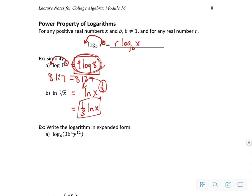So in this case, I recognize on part A that 36 to the x is multiplied times y to the 11th. There's a times in here. So I can use the product rule, or the product property of logarithms.